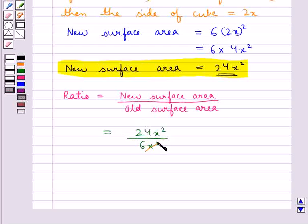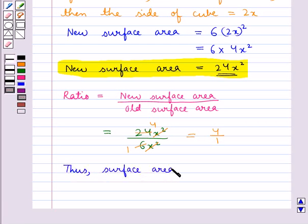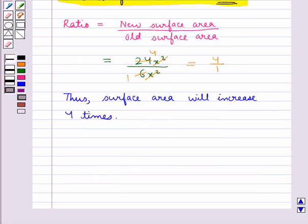Now this X square is cancelled with this X square, and we know that 6 times 4 is 24. So this is equal to 4. So this is equal to 4 upon 1. Thus we say that surface area will increase 4 times. Hence our final answer is 4 times.